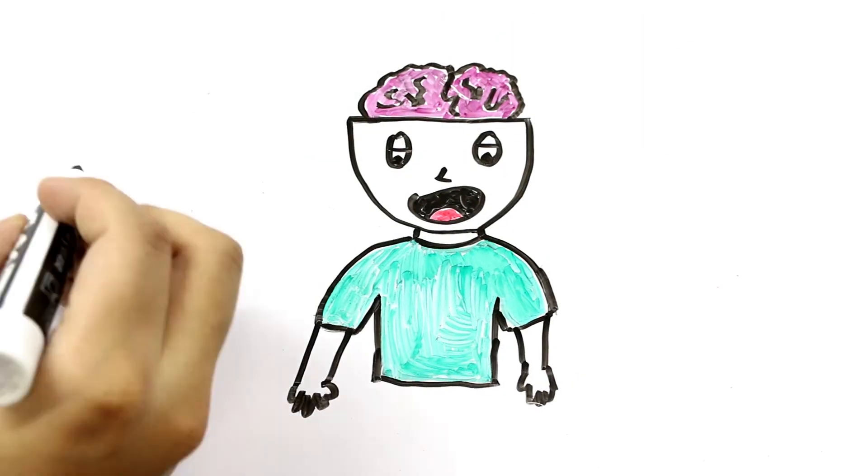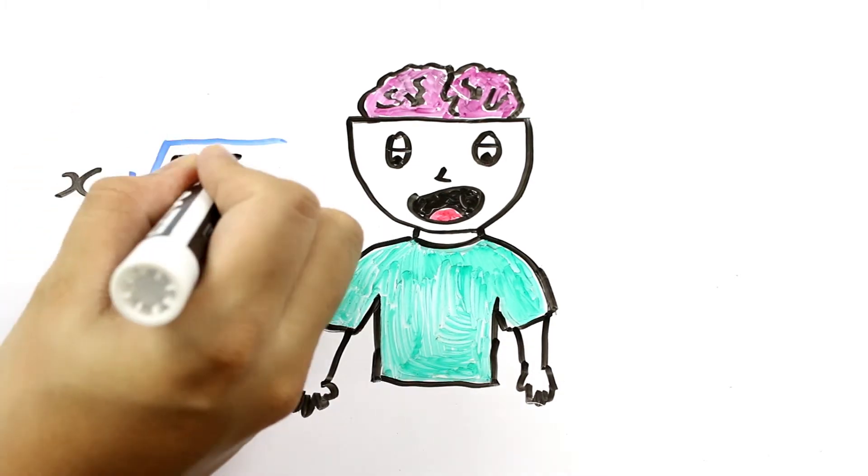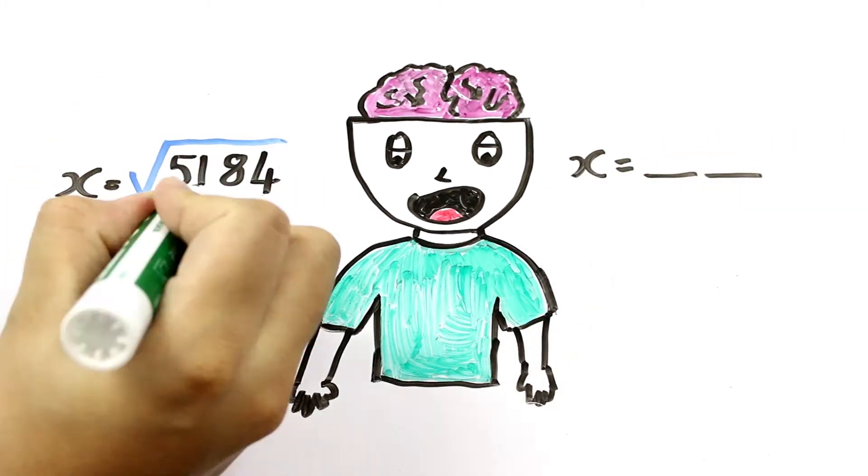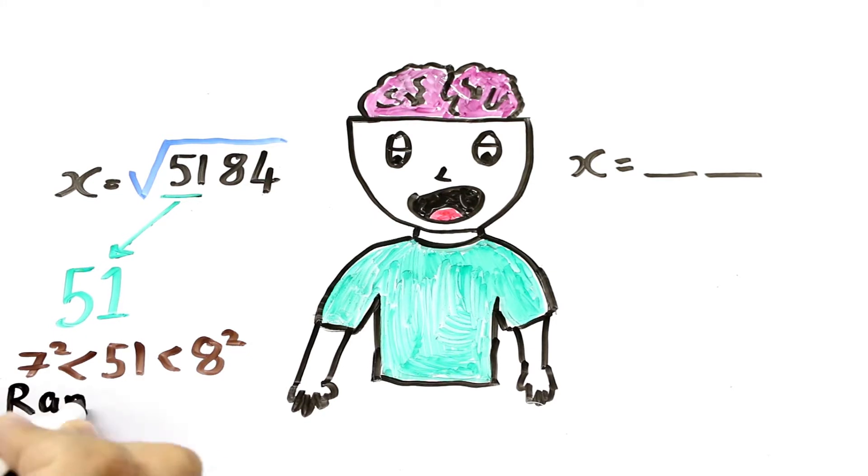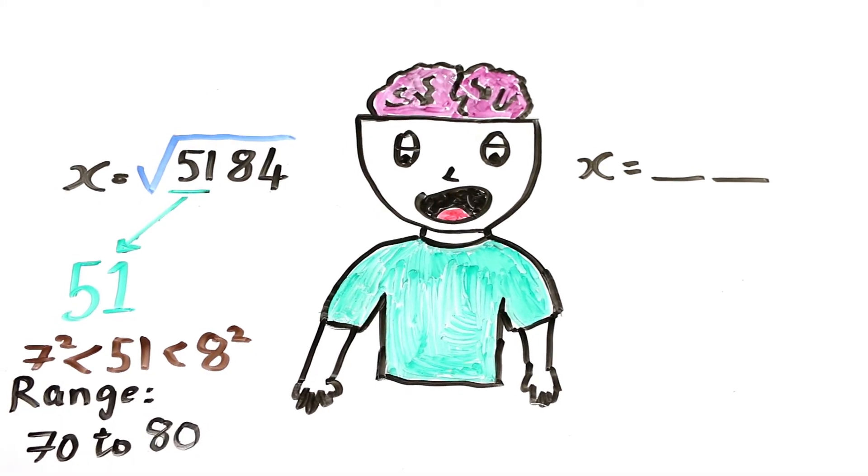Let's say you want to find square root of 5184. Step 1 is to look at the first two digits of the number, here it is 51. This lies between 7 square and 8 square. So our range will be 70 to 80.